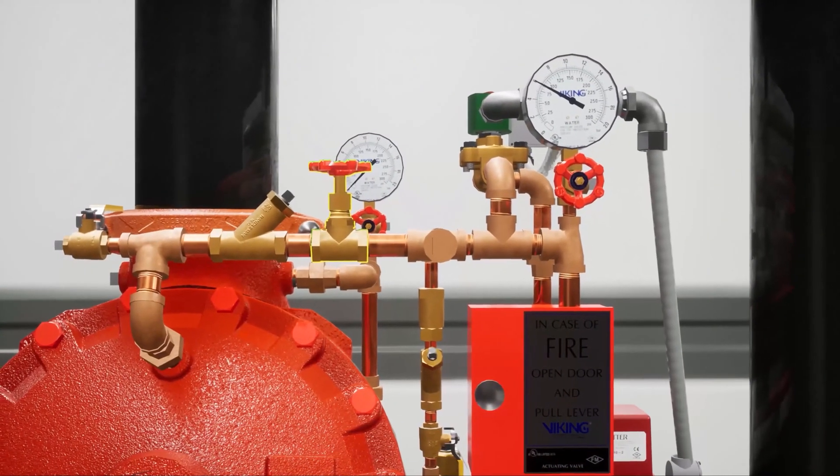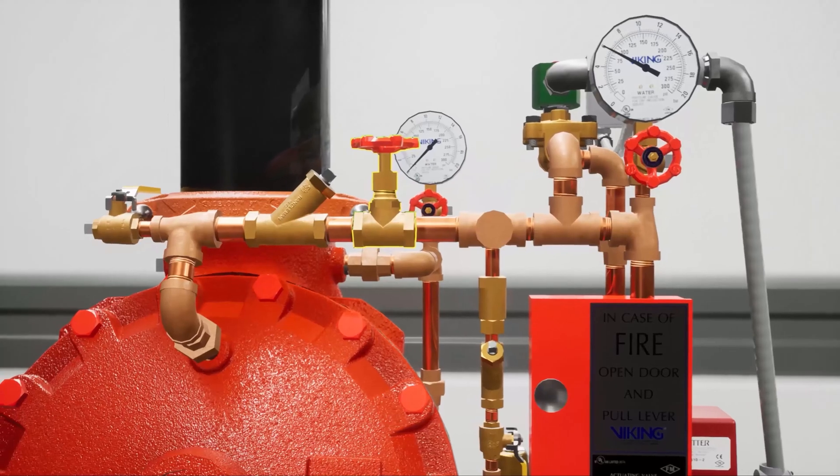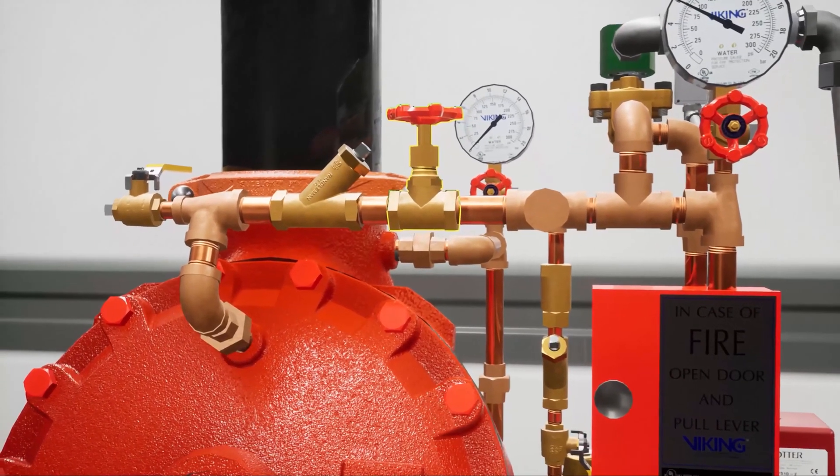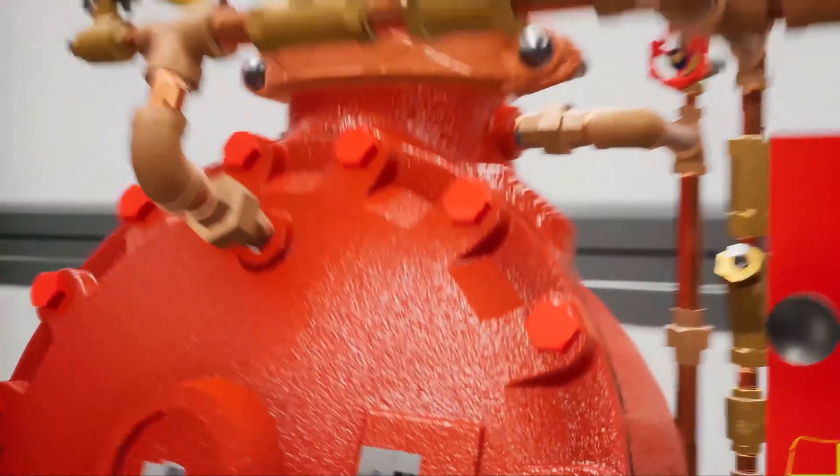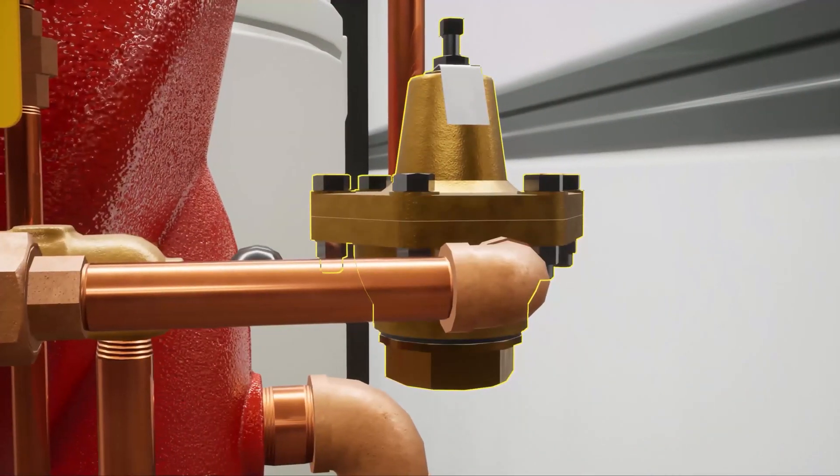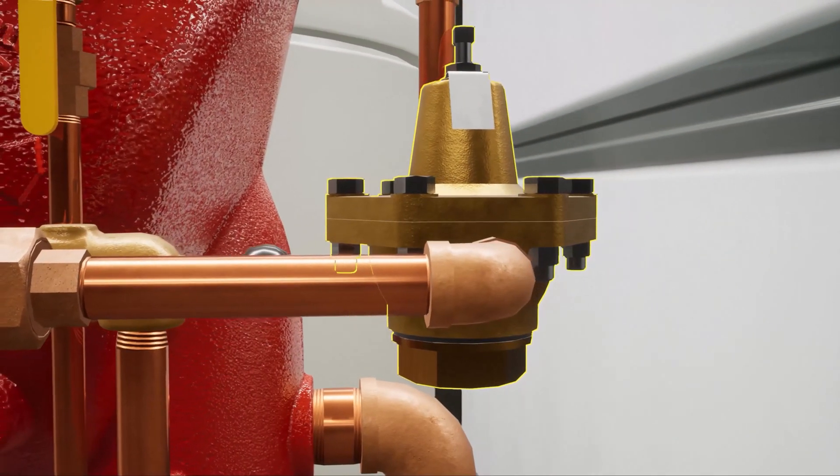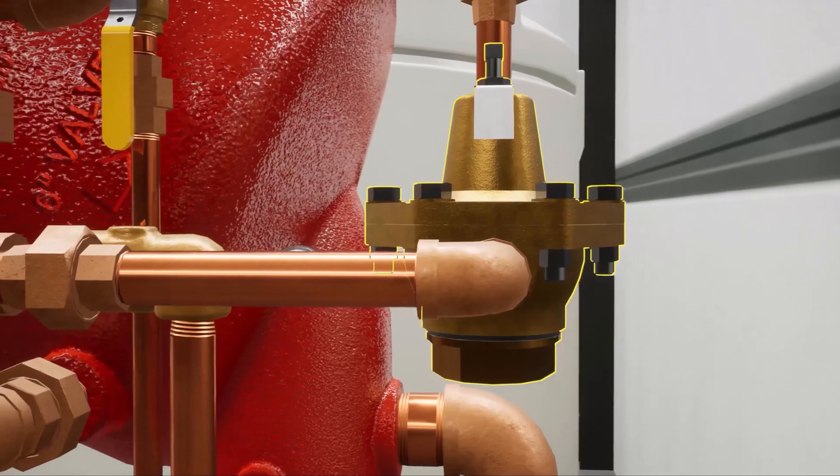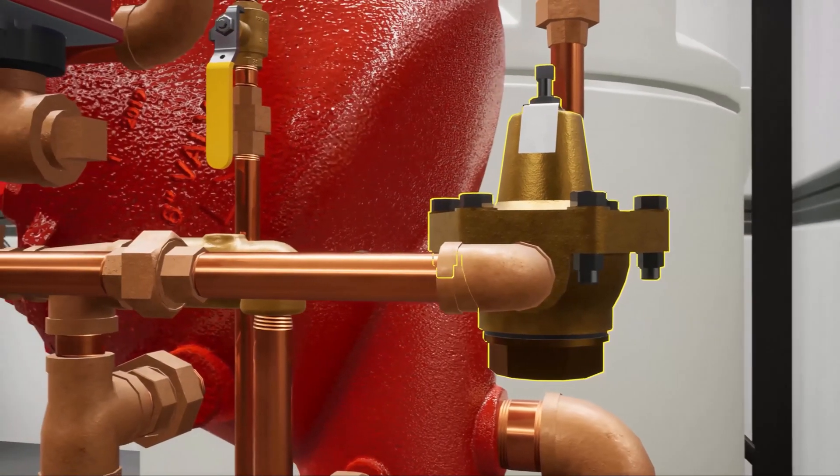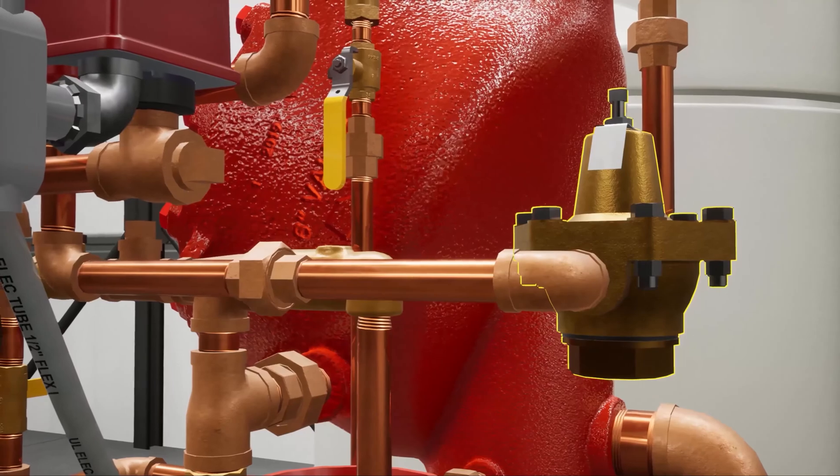The speed control valve controls the flow of priming water in and out of the priming chamber. The back pressure is sensed on the outlet of the C2 pilot pressure regulating valve, and then the speed control valve controls the flow of water in and out of the priming line.